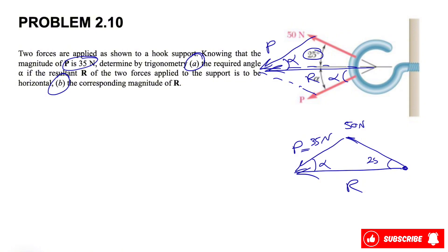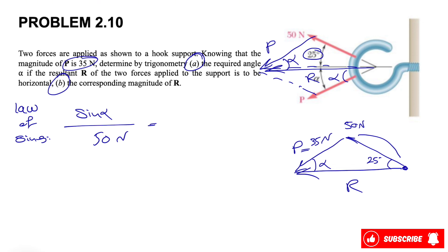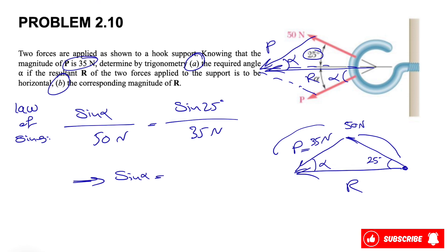We know this angle is 25 degrees and everything is ready for using the law of sines. We have sine of alpha over the force 50, and over here we have sine of 25 degrees over force P, which is the side of 35 newtons.